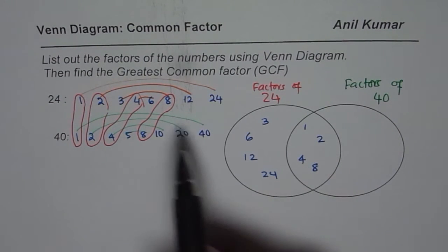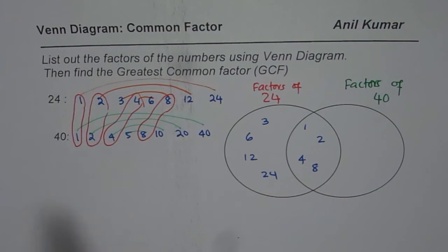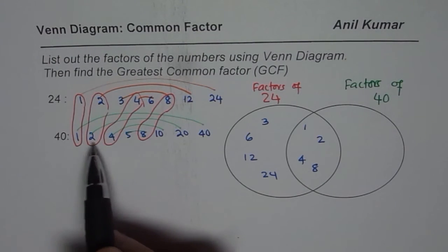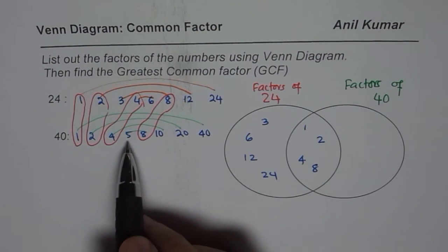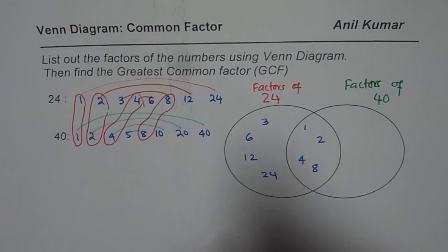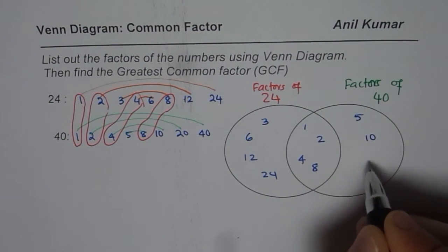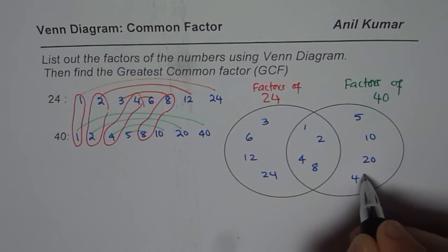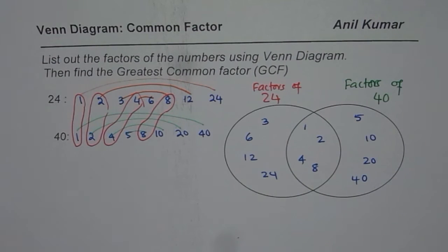If you count, all of them have been taken care of. Now list factors of 40. 1, 2, 4 and 8 is taken care of. 5, 10, 20, 40 is left. So we will write 5, 10, 20 and 40 for factors of 40.